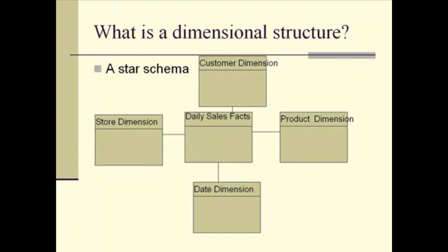We often organize the dimensional structure in what's known as a star schema. In the center of the star we have a fact table — facts, measures, numbers about daily sales. This is where information from the order and order details tables might be collected. We then have various dimension tables: one for the customer, one for the product, one for the date, one for the store. The structure of a fact table central to a number of dimension tables is typical of a star schema and dimensional structure.